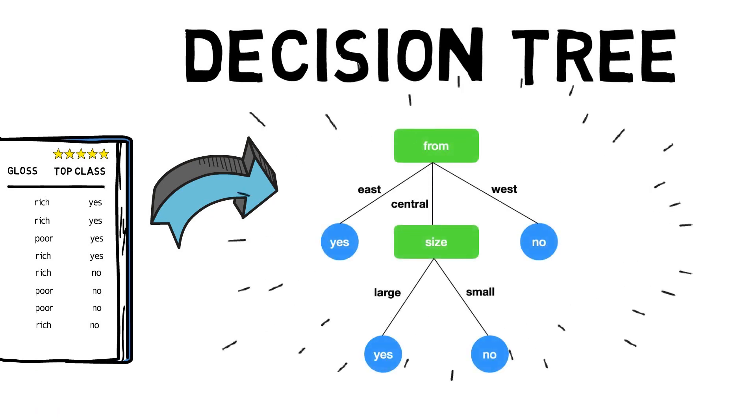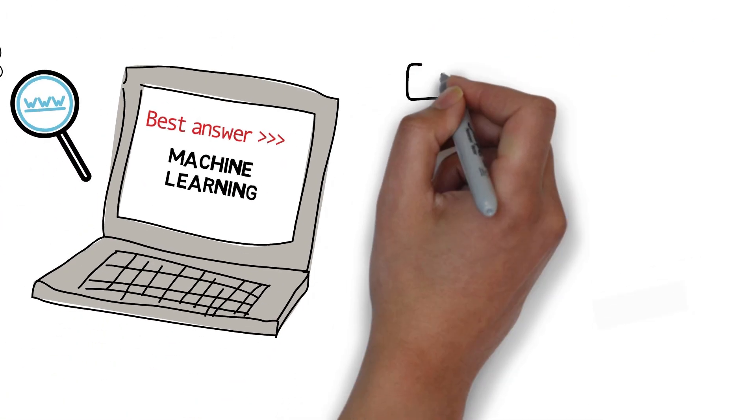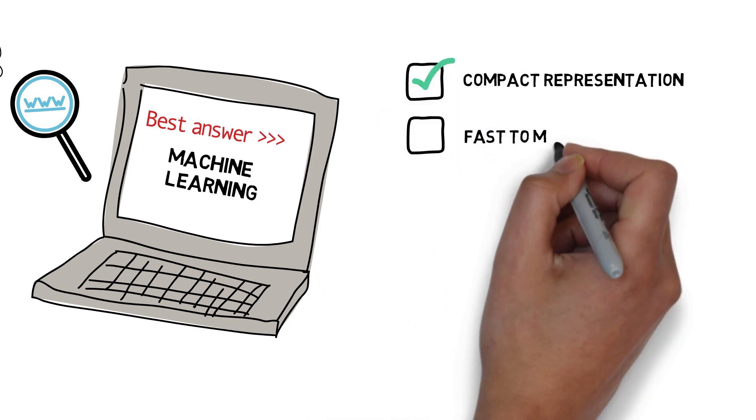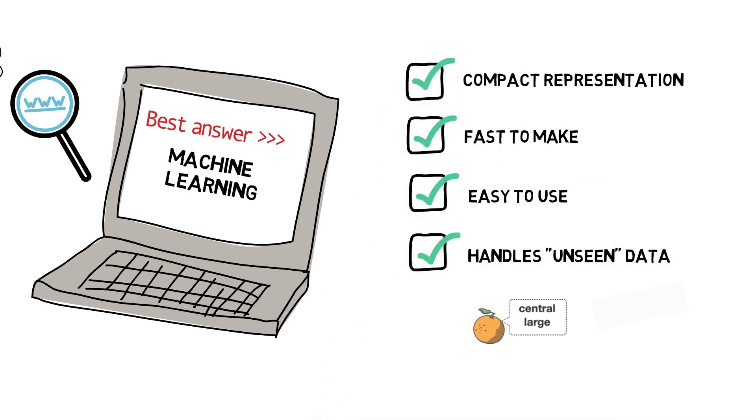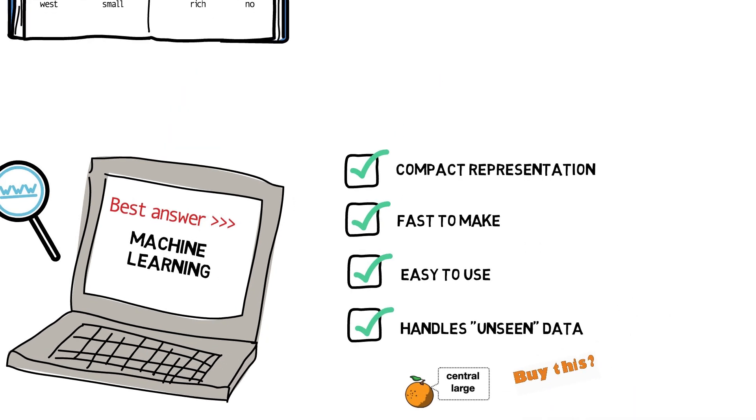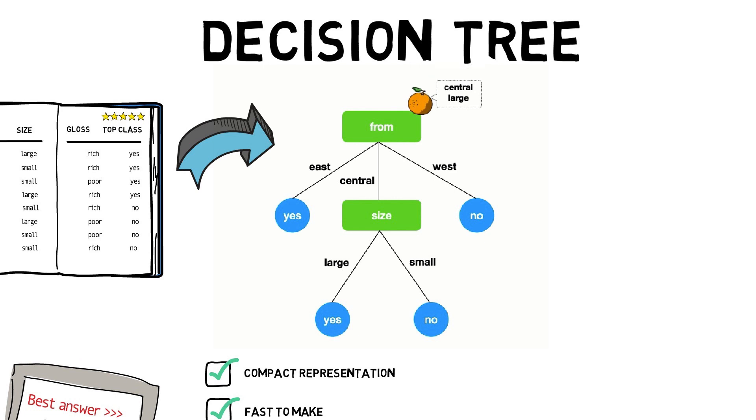This kind of decision tree can be learned automatically. It's compact, quick to make, and simple to use. Wondering whether to buy an orange you found in a store? Start at the top of the tree and compare the fruit's qualities to the values you find in the nodes and branches. The final node you reach predicts how the orange will be.